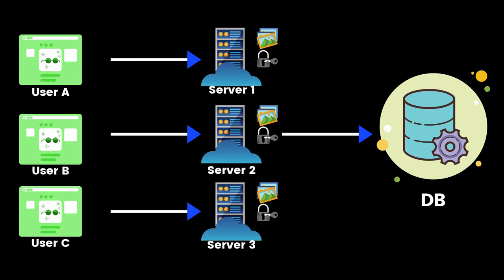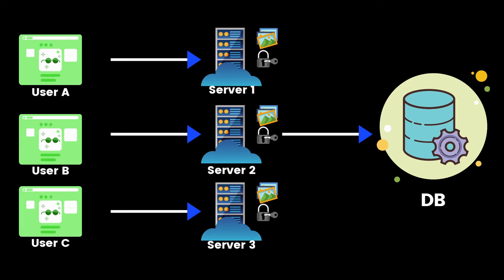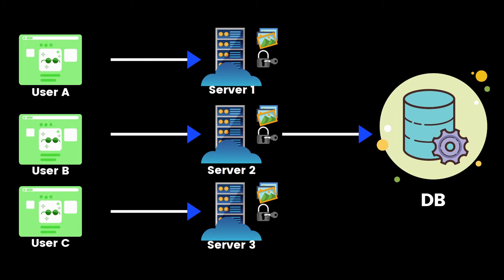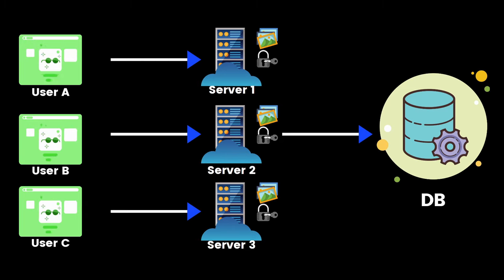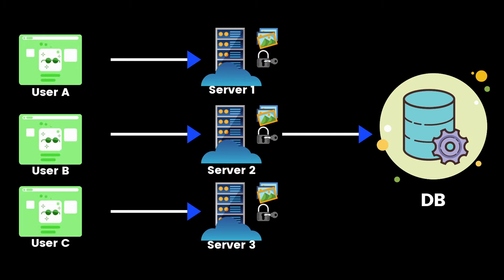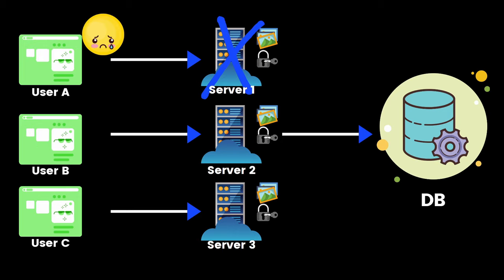For example, if user A is trying to log into the website, user A will talk to server one. The state here is nothing but the data of the user — such as profile images or the crucial session data of that user — stored in that specific server locally. The database is present but we are not storing the user's state in the database in the stateful architecture.